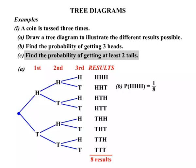What about the probability of getting at least two tails? Now at least two tails means two tails or more than two tails. So let's see where it occurs. There it occurs once. It occurs there again. It occurs there again.